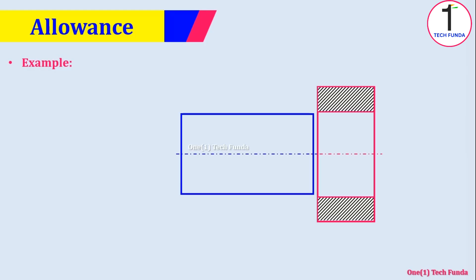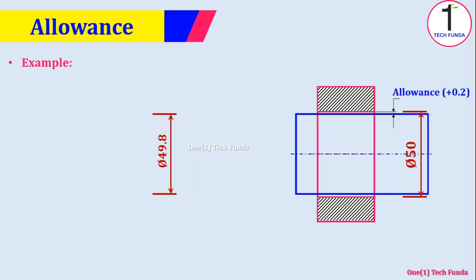Let's see the example: if a hole is 50 mm and the shaft is 49.8 mm, then allowance will be plus 0.2 mm.